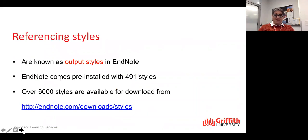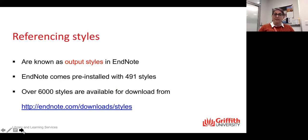The other thing to be aware of is that in EndNote, a referencing style is known as an output style. It comes pre-installed with 491 styles, and there are over 6,000 styles available on the EndNote website. You'll also find that some big publishers like Springer and Elsevier journals have created their own EndNote output styles that you can find on their pages — they aren't necessarily on the EndNote website.